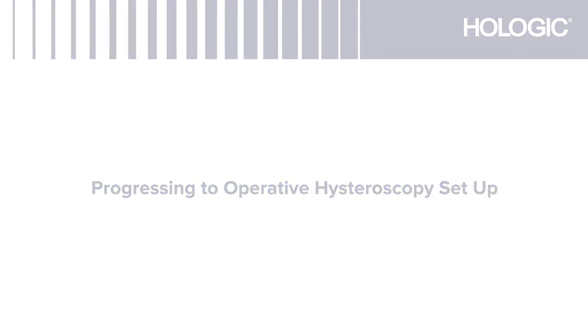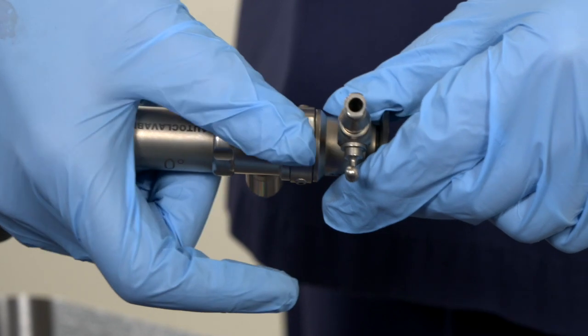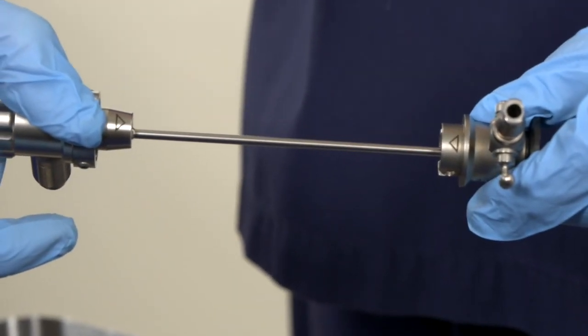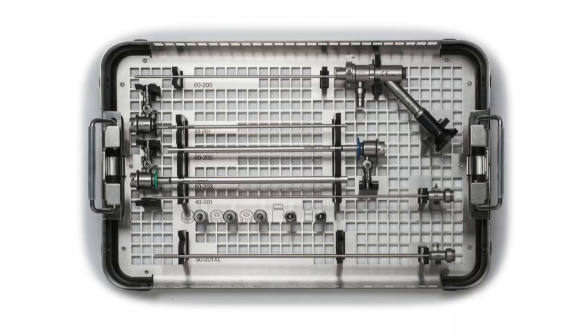If pathology is identified then this is how to proceed with changing the scope configuration. Remove the 3.7mm black sheath by pressing the white button and sliding apart. Place the black sheath back into the scope tray into the slot indicated 60-201 on the tray.